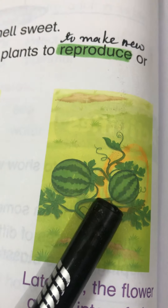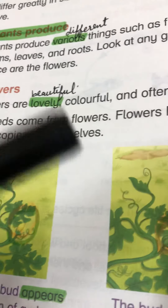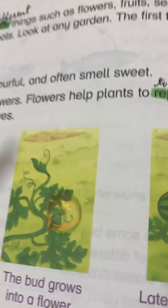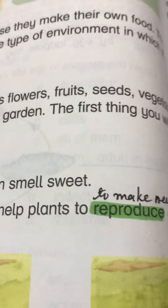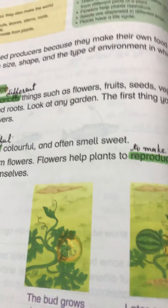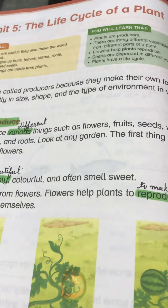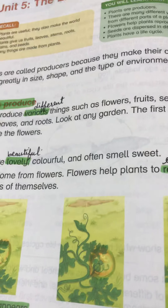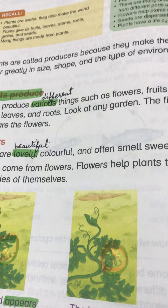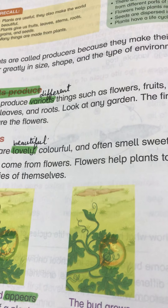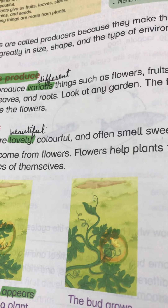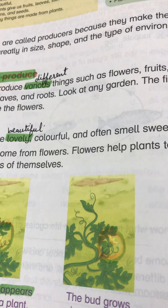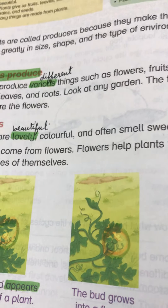So یہ تھا ہمارا flower کا topic — کہ کیسے flower جو ہے پودوں کی help کرتا ہے new plants بنانے میں اور fruits بنانے میں۔ آج کے لیے اتنا page ہے۔ اگر آپ کو کوئی چیز سمجھ نہیں آئی تو آپ مجھ سے پوچھ سکتے ہیں — questions کر سکتے ہیں۔ WhatsApp میں اس کا link share کر رہی ہوں — آپ دیکھیں اور سمجھیں۔ اگر کچھ نہ سمجھ آئے تو group میں پوچھ سکتے ہیں۔ Allah Hafiz۔